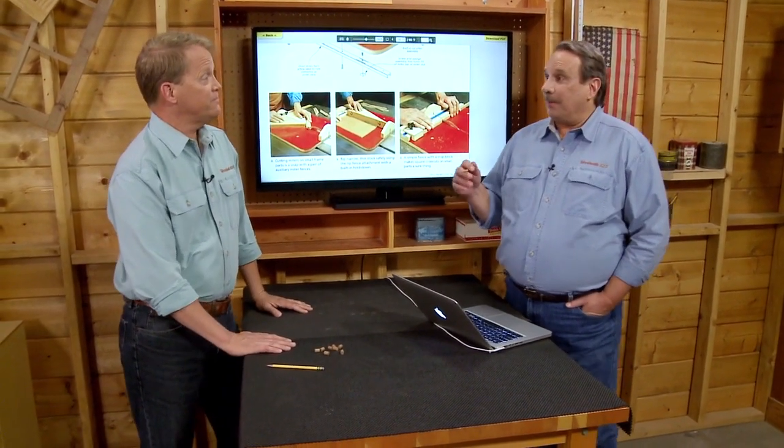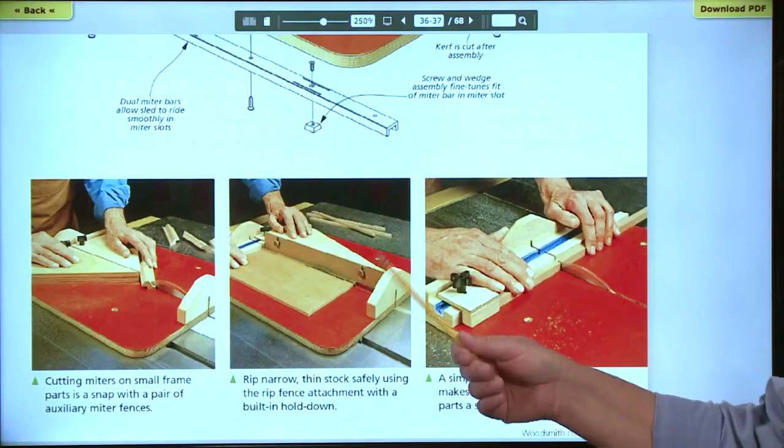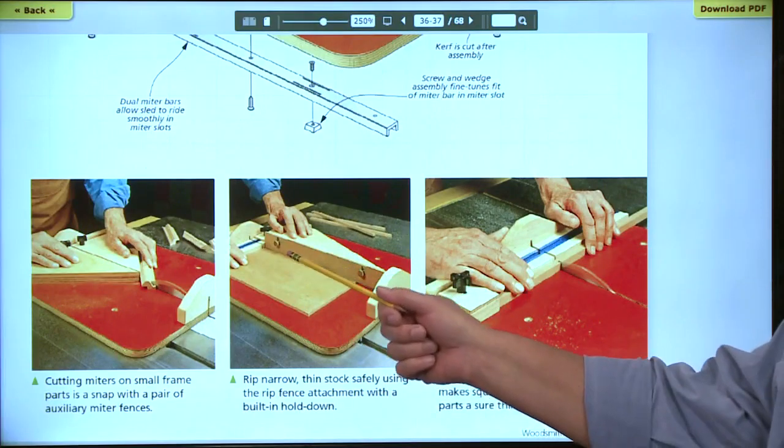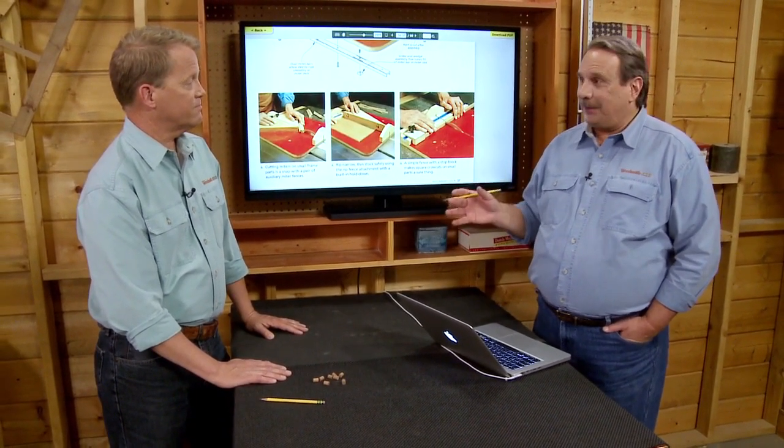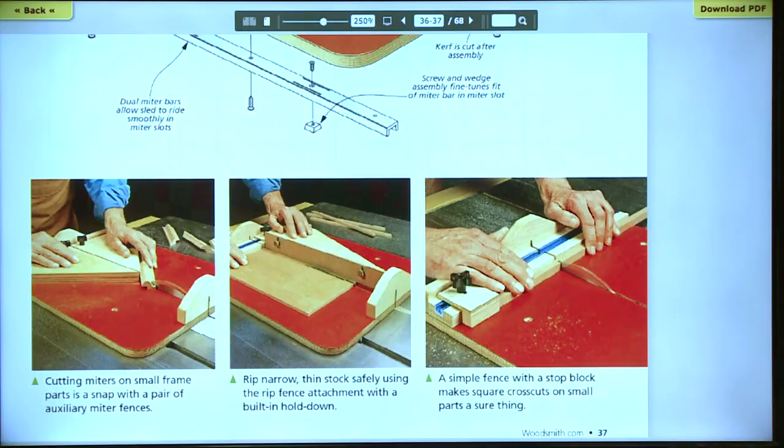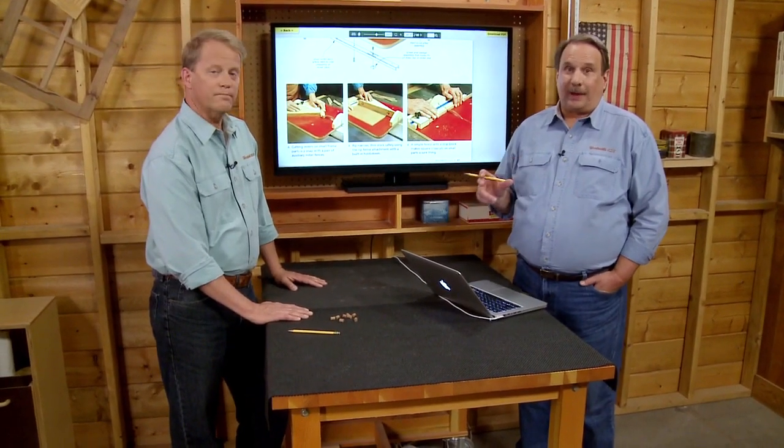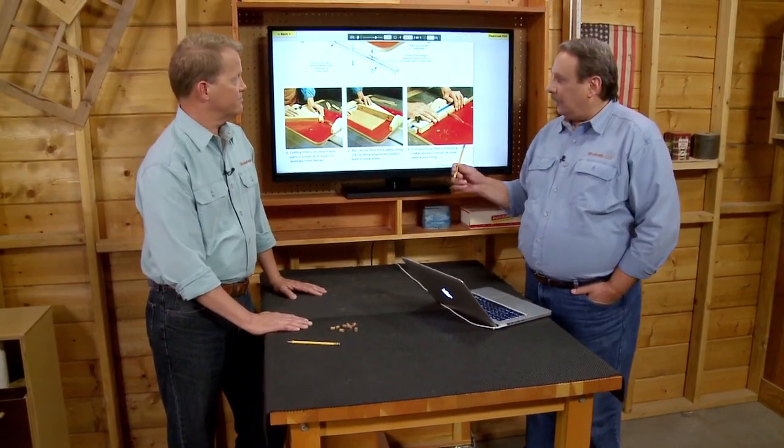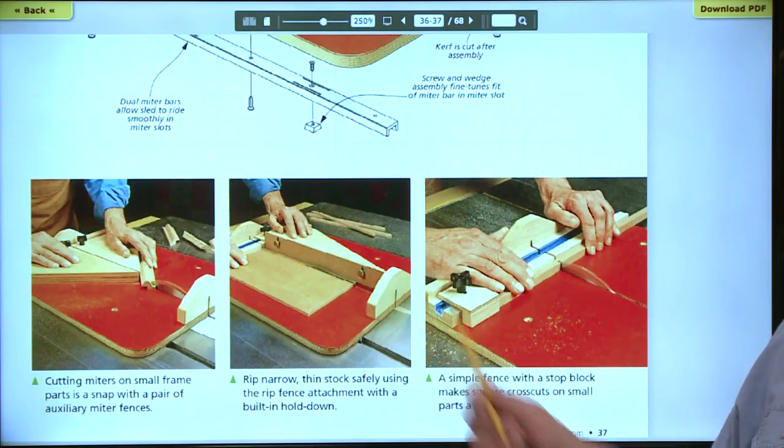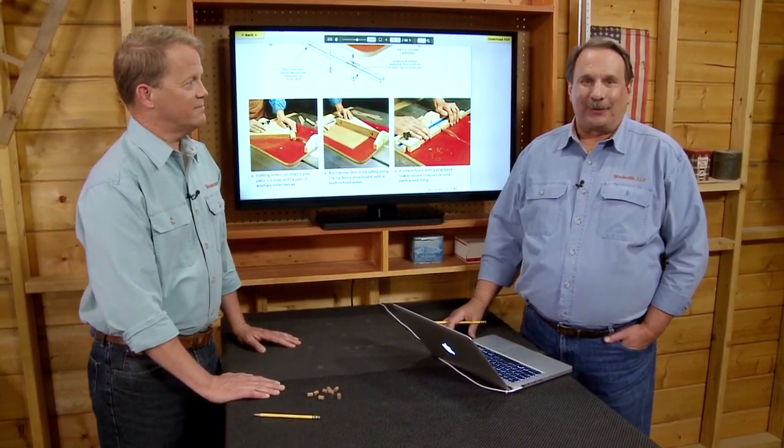So we wanted to make it a multi-purpose small part sled with those two attachments. We have a third one that is a rip fence. So if you have to rip small pieces, you can add that to the sled. And then even a fourth one, which is a cutoff fence with a stop if you have to cut a lot of small pieces repetitively to exactly the same length. So looking at pictures of this small part sled is okay, but maybe we should get in the shop and look at it for real.